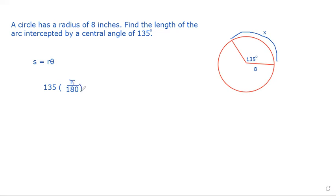135 times pi over 180. Now, the common denominator right here would be 45. 45 is going to go into 135 three times, and it's going to go into 180 degrees 4 times. So that's going to be 3 pi over 4.